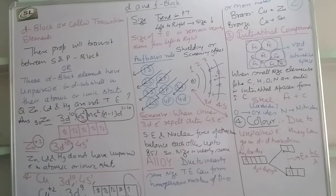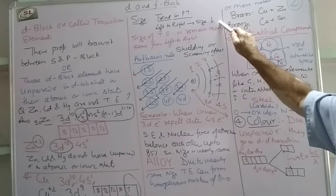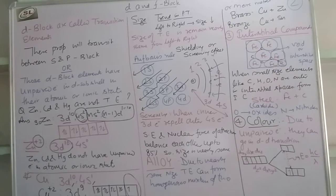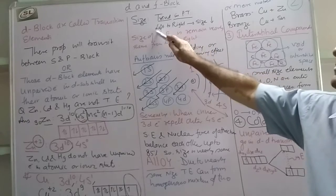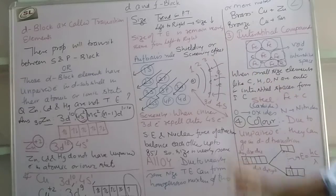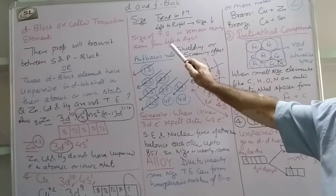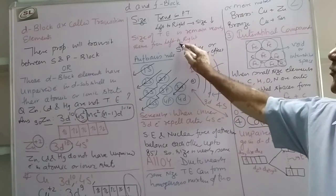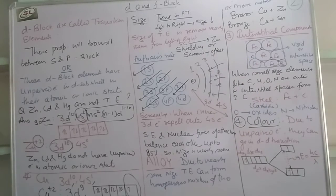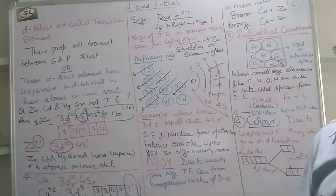Now we will discuss some properties of the transition elements. For example, we will discuss size. Size is very important. As a general trend in periodic table, when we go from left to right, size decreases. But in case of transition elements, the size of the transition elements remains nearly the same when we move from left to right. That means when we move from scandium to zinc, size remains nearly same. How can we understand it?